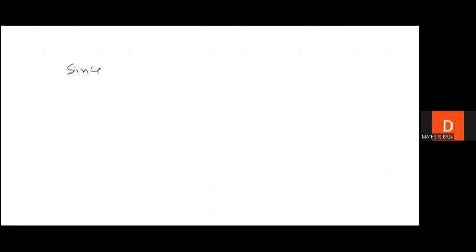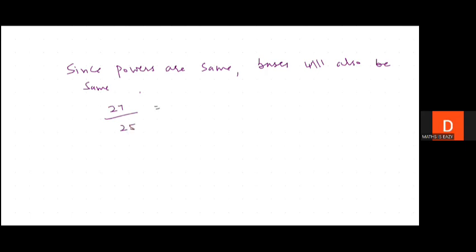Since the powers on both sides are the same (both cubed), the bases must also be equal. So we write: 27/25 = 1 + r/100. Bringing the 1 to the left-hand side: 27/25 − 1 = r/100.